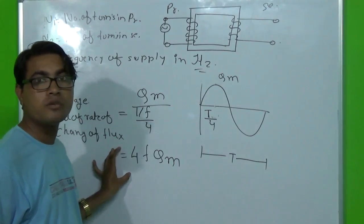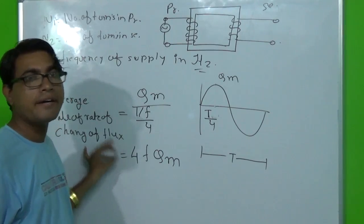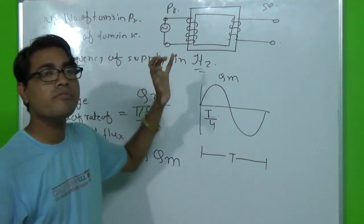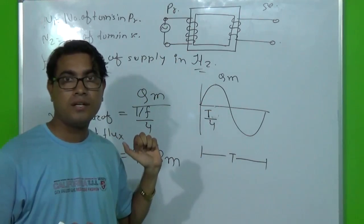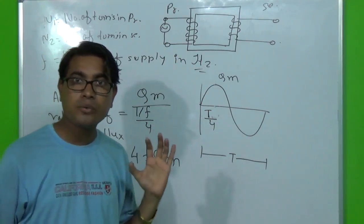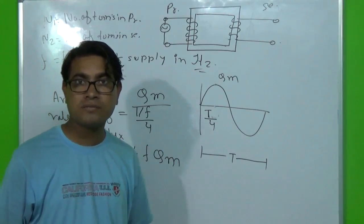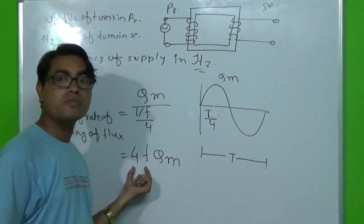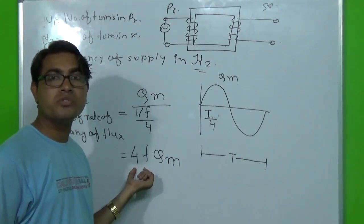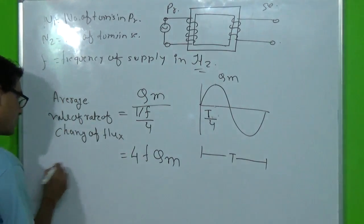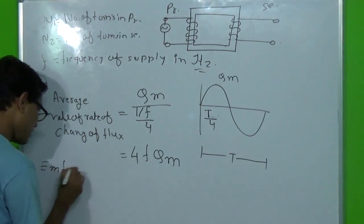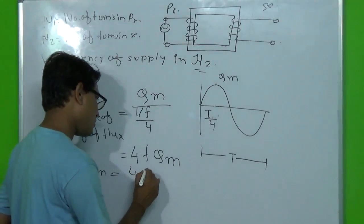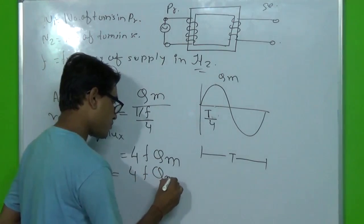This is the average value of rate of change of flux. We know that the EMF induced per turn in a coil is equal to the average rate of change of flux. So the EMF per turn will be equal to 4·F·Phi_M.